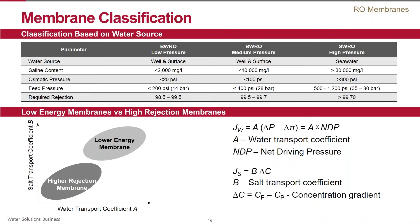Brackish water membranes are designed to treat lower salinity — anything below 10,000 milligrams per liter. Within this classification, there are subsets rated for different performance. For example, within the seawater domain, we can differentiate high rejection and low energy membranes, and the same applies to brackish water membranes. Low energy membranes are designed to reduce the energy required to generate permeate, while high rejection membranes offer better permeate quality at the expense of energy savings.